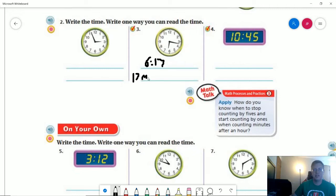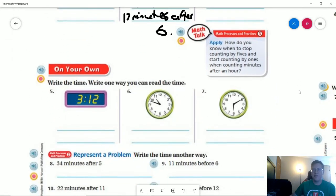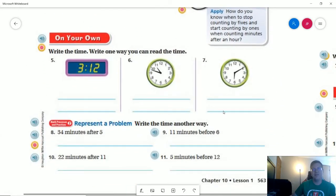For number 5, write the time. We have a digital clock which everyone should be comfortable with. That one is very obviously going to look exactly the same, 3:12. One way we could read the time would be 12 minutes after 3.